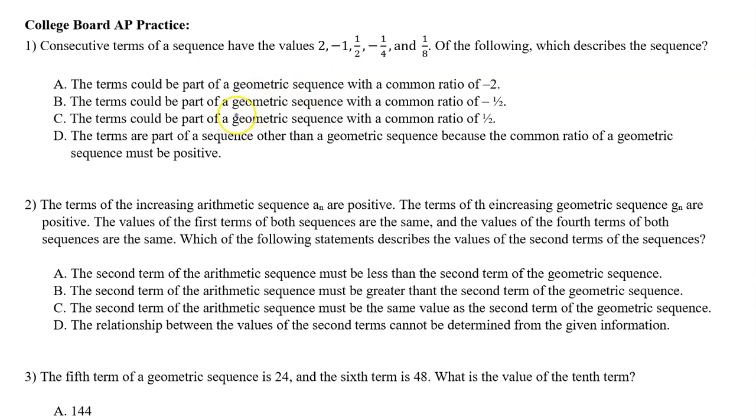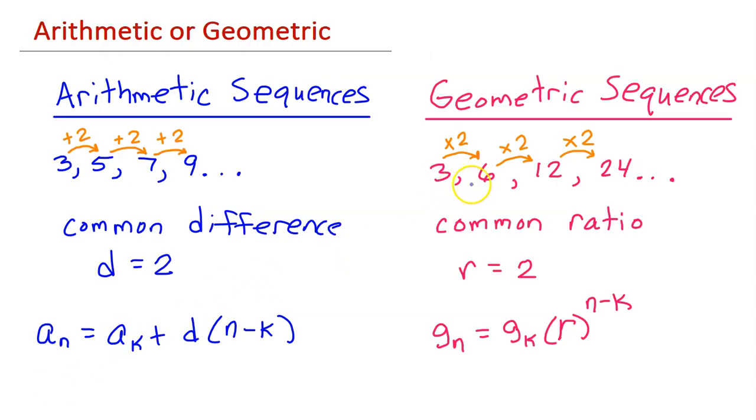Notice that all of the options mention geometric sequences. In a geometric sequence, successive terms have a common ratio, like this one has a common ratio of 2, because we can get from one term to the next by multiplying by 2. And we call the common ratio r, in this case r equals 2.